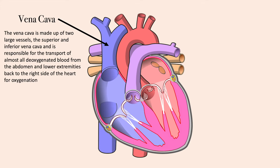The vena cava is made up of two large vessels, the superior and inferior vena cava, and it is responsible for the transport of almost all deoxygenated blood from the abdomen and lower extremities back to the right side of the heart for oxygenation.